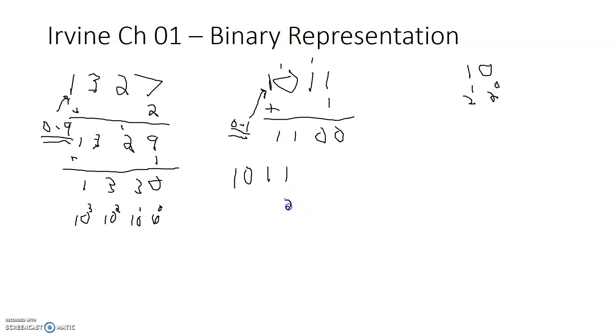So the rightmost digit is 2 to the 0. That's our 1s position. The next one, 2 to the 1. The next one, 2 to the 2. The next one, 2 to the 3.